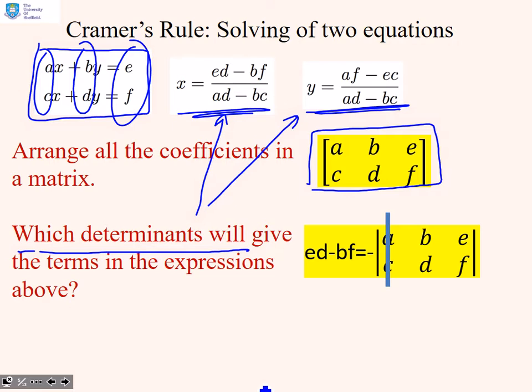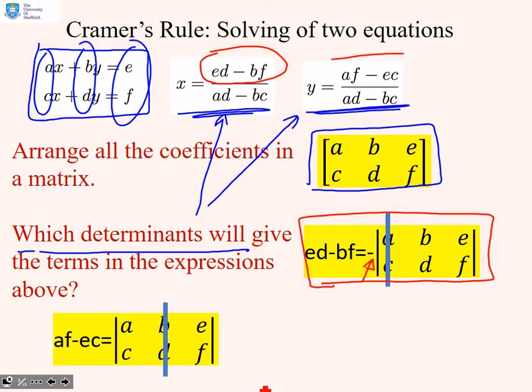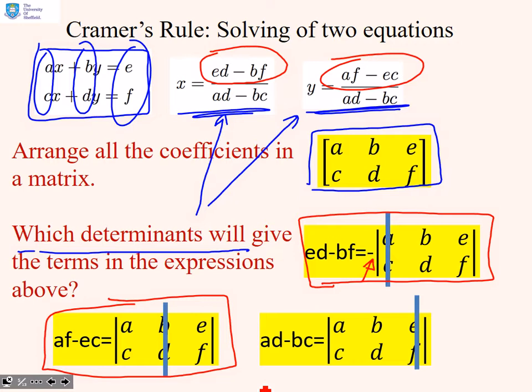In order to solve for x, we've got the term ed - bf in the numerator. We can get ed - bf from this determinant expression here, a matrix made of e, b and d, f, but please notice this minus sign. We can get the term af - ec from this determinant here.